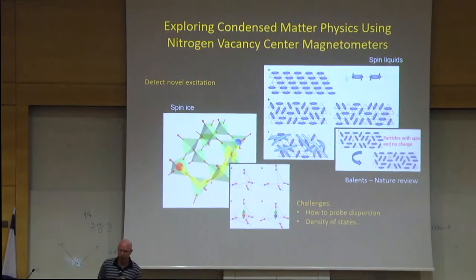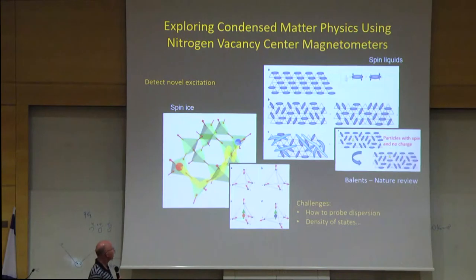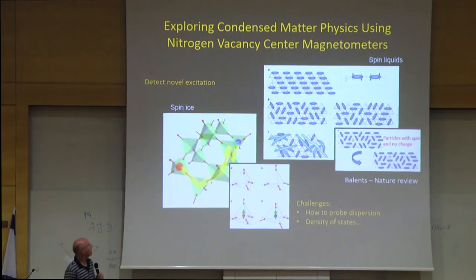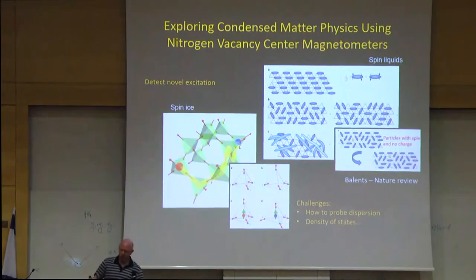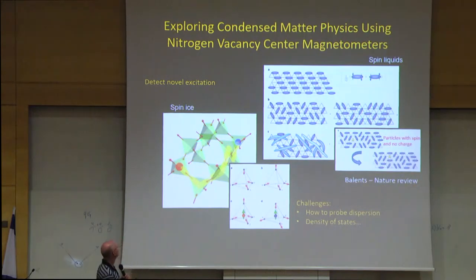One example is materials known as spin ice — frustrated magnets where on a unit cell, spins want to point inwards and outwards. It's called ice because it resembles real water ice, where hydrogen positions follow a two-in, two-out rule. If you flip one spin to create an excitation, you form a pair. These pairs are weakly bound, but the magnetic field generated by each end resembles that of a monopole — the system has monopolar-type excitations.